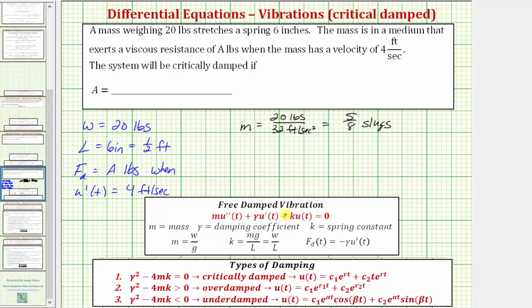And now let's find the damping coefficient using the formula. The damping force equals the opposite of gamma, the damping coefficient, times the velocity given by u prime of t. We are going to modify this slightly because the damping force is always in the opposite direction of the velocity, which means we can ignore this negative sign here and say that gamma is equal to the damping force divided by the velocity. So in this case we'd have a pounds divided by the velocity of four feet per second. So we have a divided by four, and we can express the units as pounds seconds per foot.